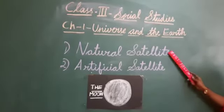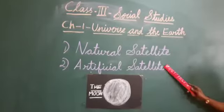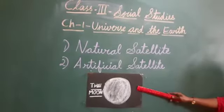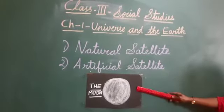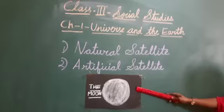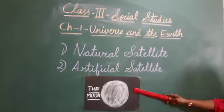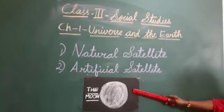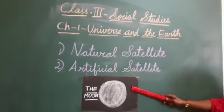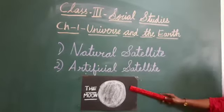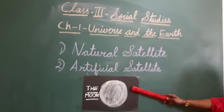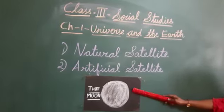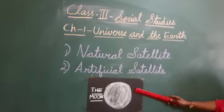Natural satellite and artificial satellite. The moon — you all know the moon which looks beautiful in the sky. The moon is the natural satellite of our earth. It is a celestial body in space and is also part of the solar system, and this is the natural satellite of the earth.